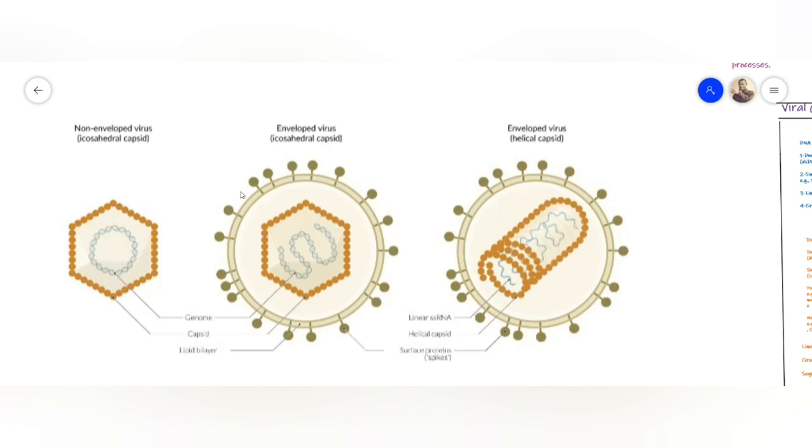This is the envelope, the lipid bilayer, which contains surface proteins—these are the spikes I talked about. Then here you have an enveloped virus again, but this capsid is helical. Specifically, the genome of this is linear single-stranded RNA in most cases. Here you have your genome, here you have the helical capsid, and outside you have the lipid bilayer and the spikes.